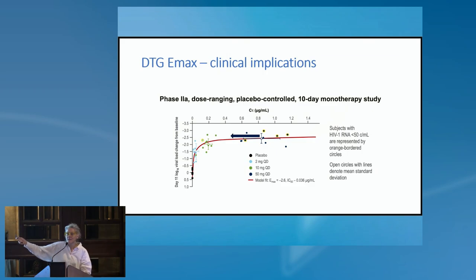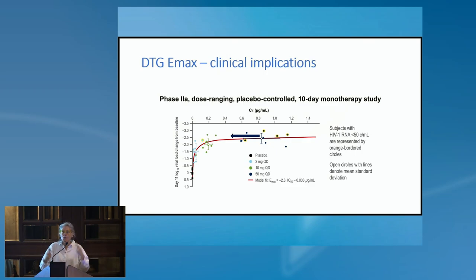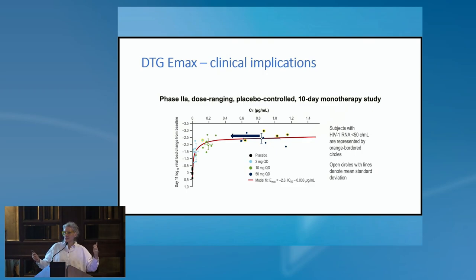When you cross that 70% threshold — which is what happens when you give dolutegravir with rifampicin — concentrations are too low, and therefore you need to give it twice a day. This illustrates how pharmacologists think when a drug becomes available: understanding these curves makes us incredibly confident about when and how to use a drug in certain scenarios.